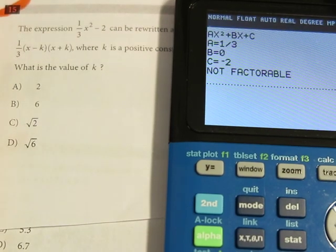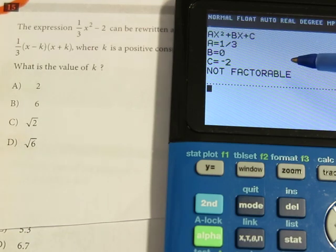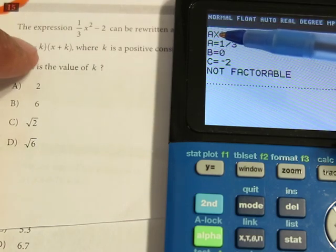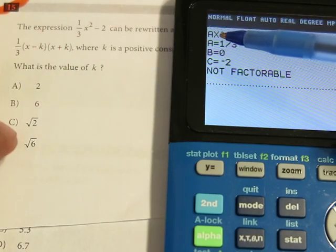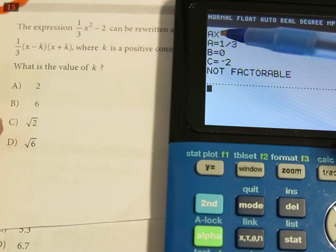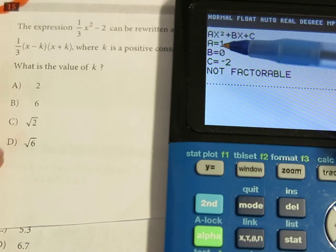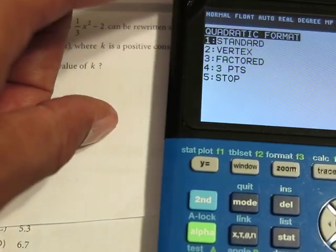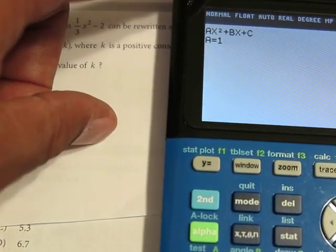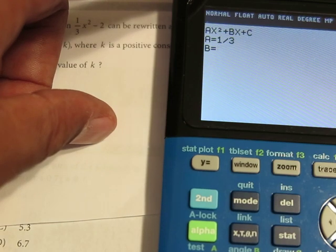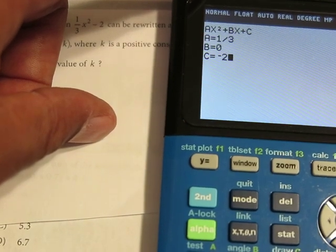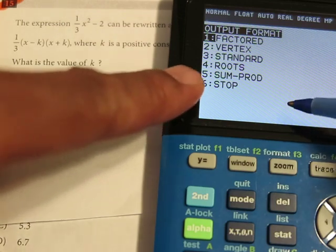We're going to enter in the standard form. So it's going to be 1 divided by 3. And there's no B term, so we're going to put in 0. The C term would be a negative 2. Now let's see if we can factor it. So I press factor. And it says not factorable. What that means is that there is no rational factors for this particular function. Now, the K value that they're referring to means that they must be irrational. So just from doing that, you should be able to eliminate A and B. Now you've got two choices, either C or D.